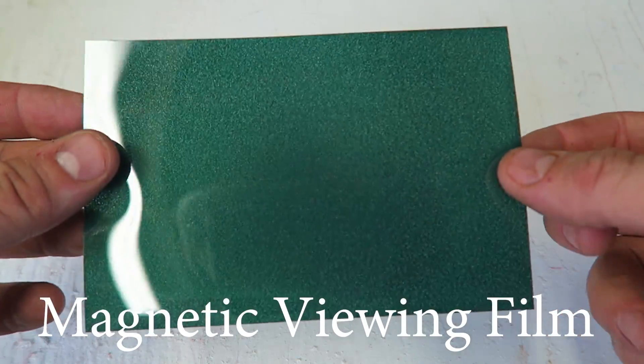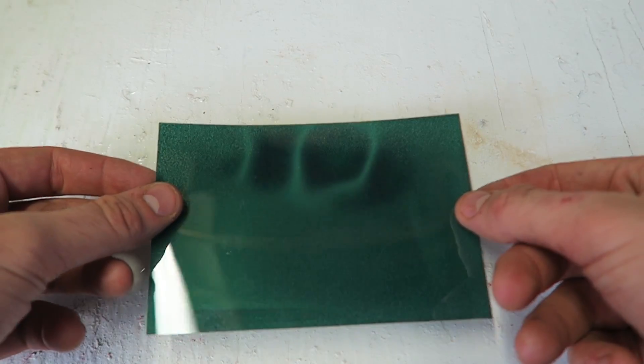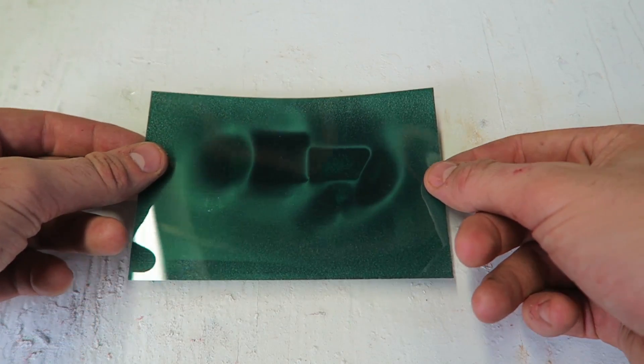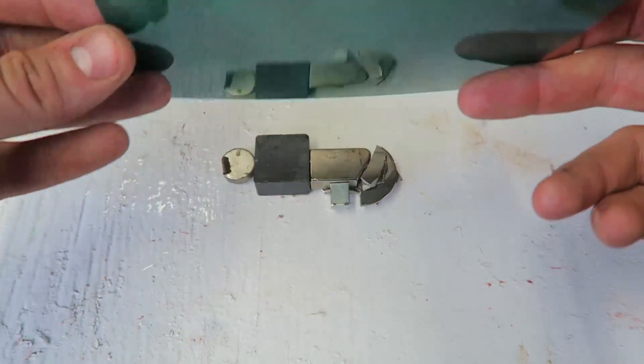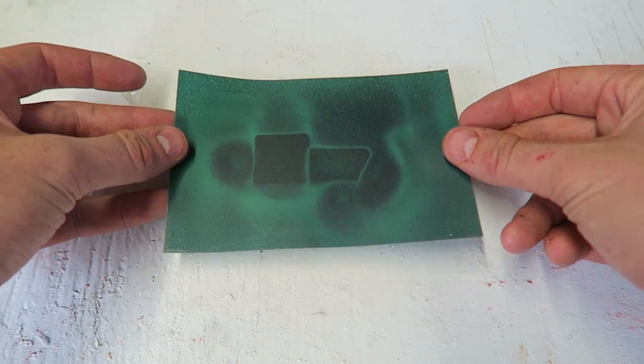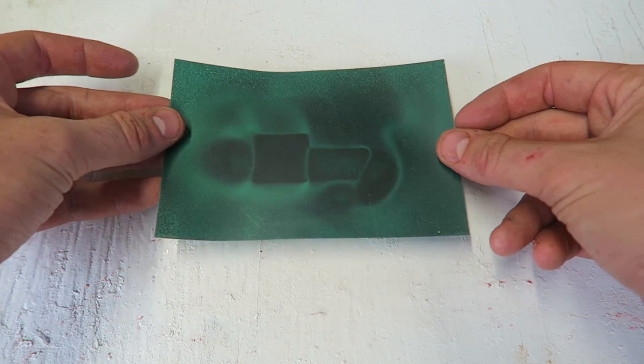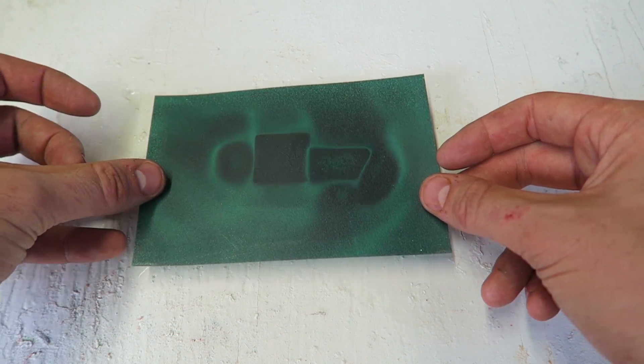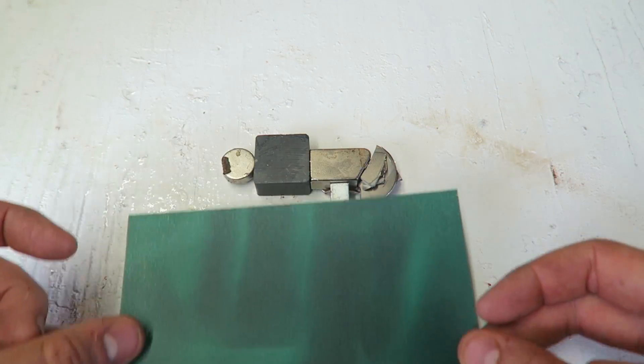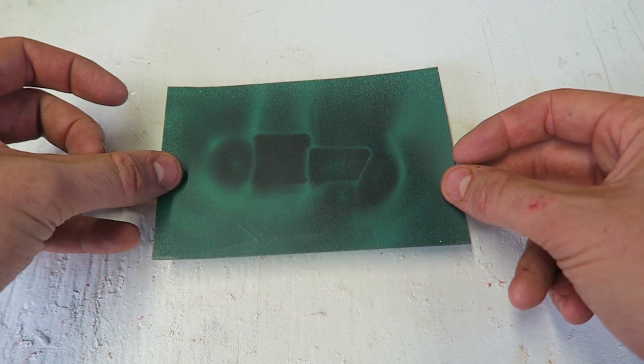Let me show you what this film does. What I'm gonna do is set it on the magnets. Boom, look at that. How cool is that? Let me tie it like this. This way you can probably see it even better. It shows you the magnetic field of each magnets.